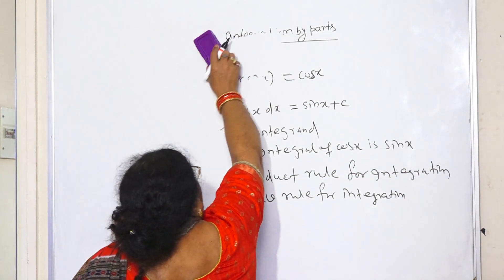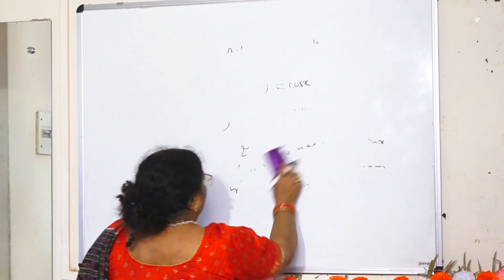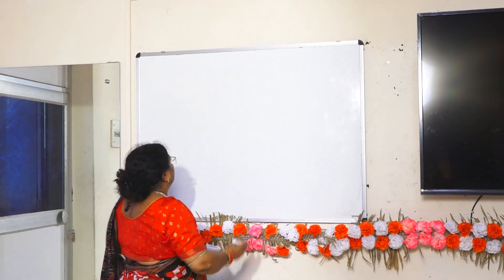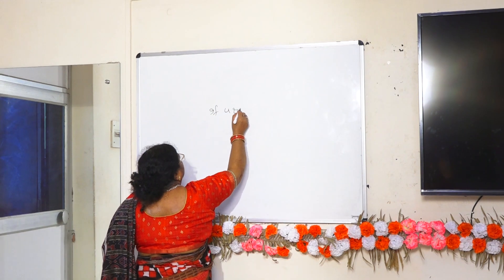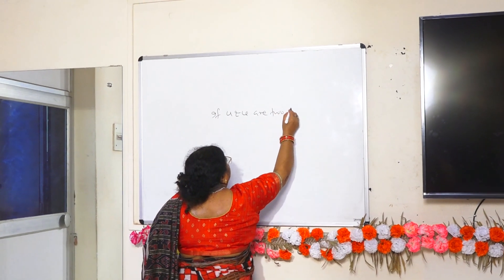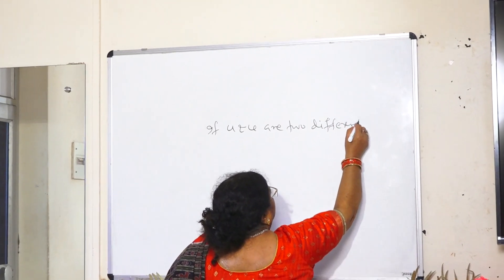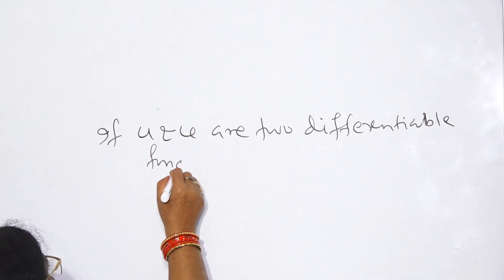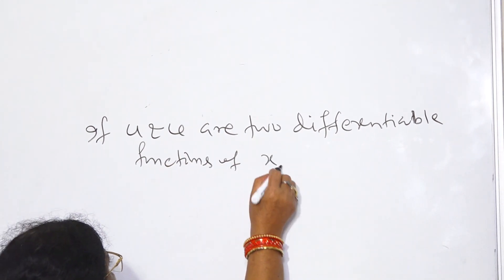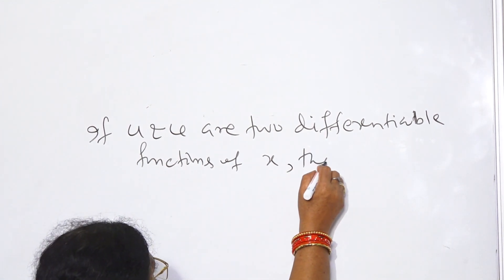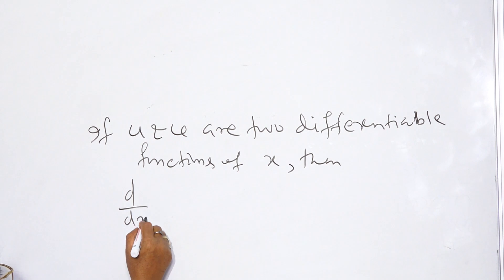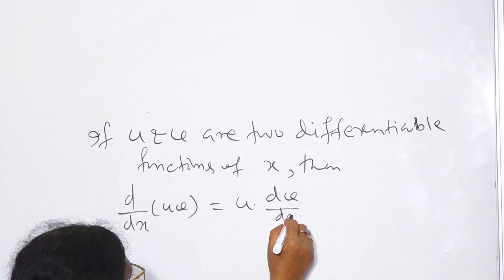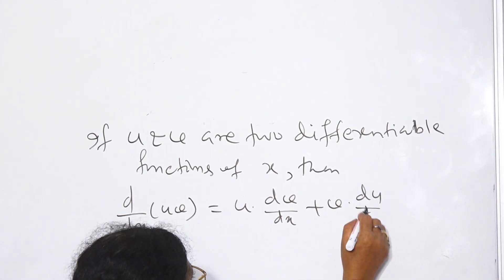This rule is derived from the rule of differentiation of the product of two functions. That is, if u and v are two differentiable functions of x, then d over dx of u·v is equal to u into dv/dx plus v into du/dx.